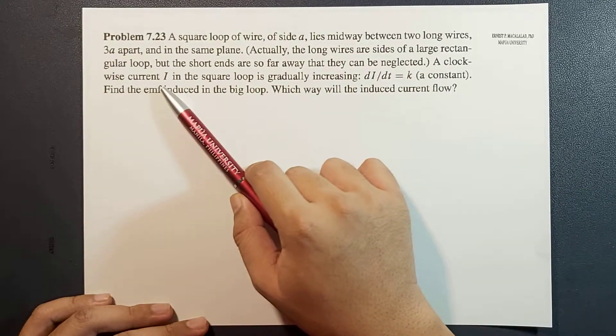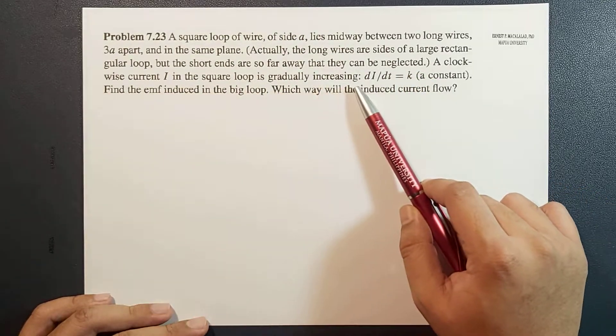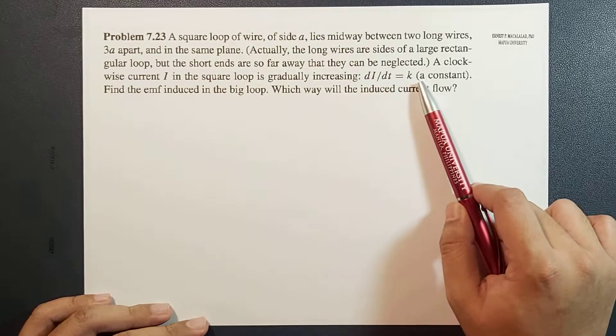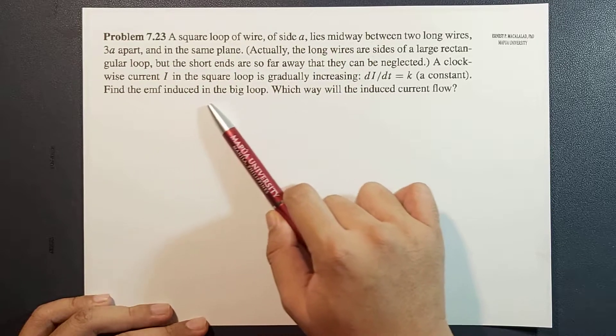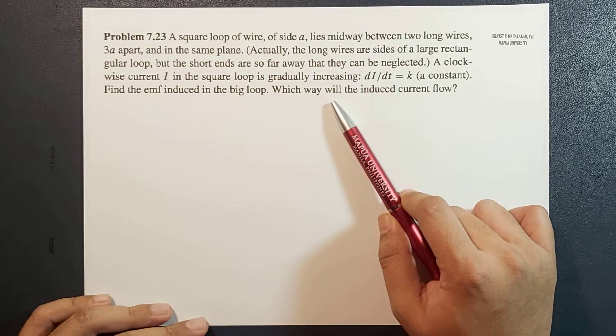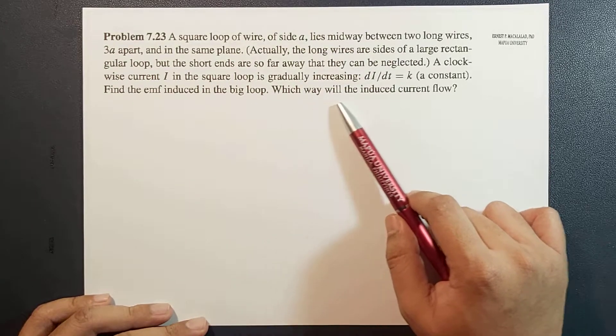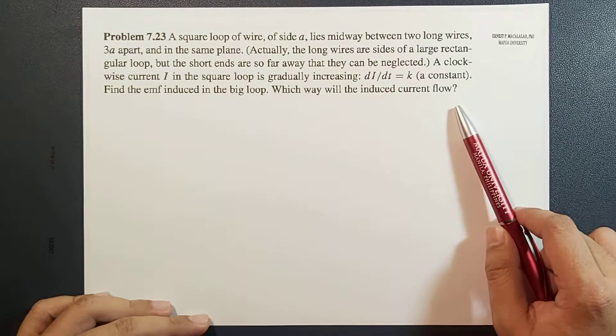A clockwise current I in the square loop is gradually increasing by a constant amount K. So we find the induced EMF in the big loop, and we want to determine which way will the induced current flow.